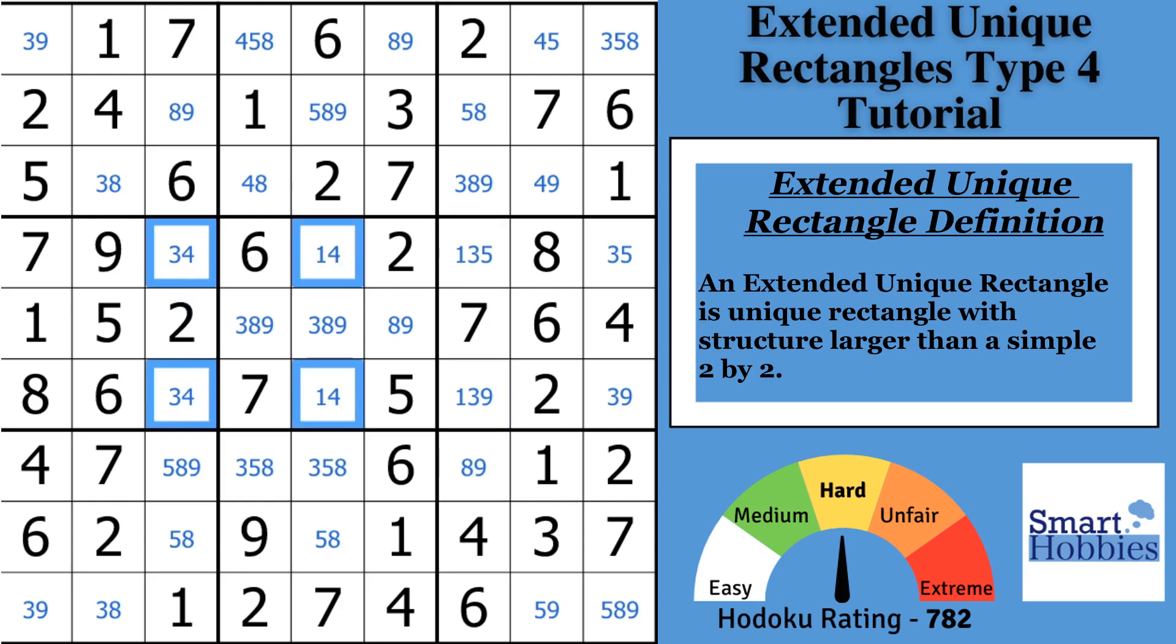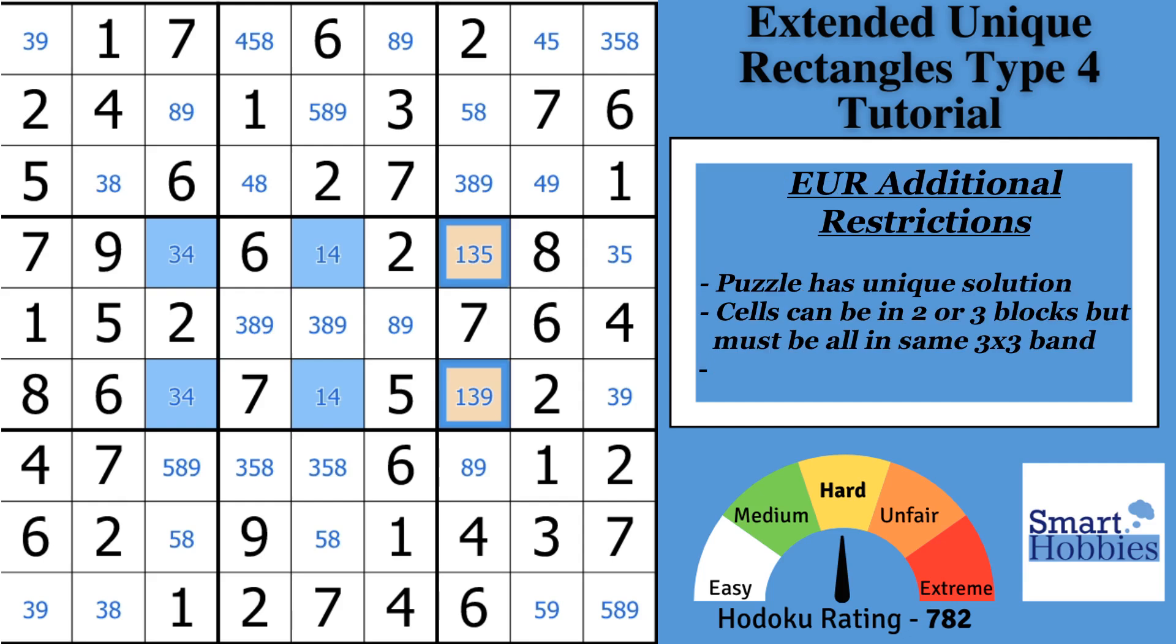I'm going to color these in blue. And I'm going to color these cells that have the additional candidates in it in orange. Two other things I want to make sure that you remember about extended unique rectangles. One is that the puzzle has to have a unique solution. You have to know that, right? You can't apply this logic. And two, you can be in two or three blocks. But you have to have all six cells need to be within the same 3x3 bands. You know, this is also called a belt. All right? You can't have these cells up here in rows 3 and then these down in row 6. It won't work. It's got to be in the same 3x3 band. It could be in two or three columns, but in the same band.